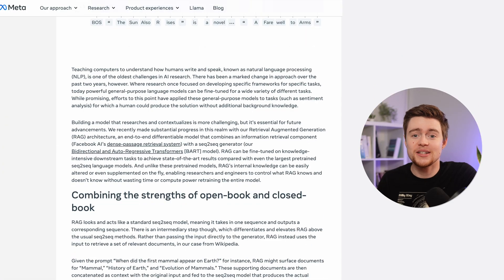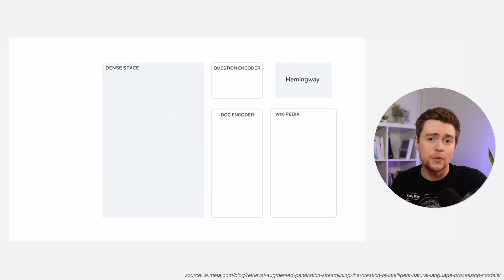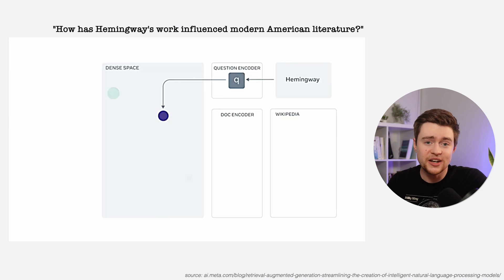Suppose we want to use a model like GPT to answer a question such as 'How has Hemingway's work influenced modern American literature?' RAG begins by using an encoder to generate a vector representation of our question. This question vector is then compared against vectors representing documents in our database - that can be relevant articles from Wikipedia, for example - using some similarity metrics.